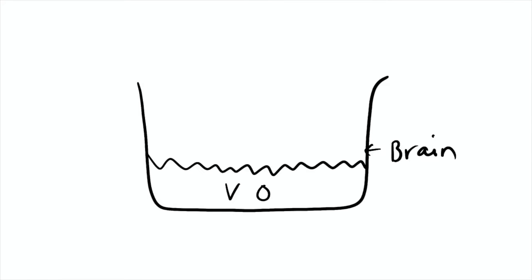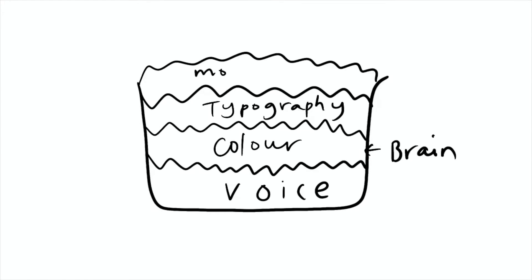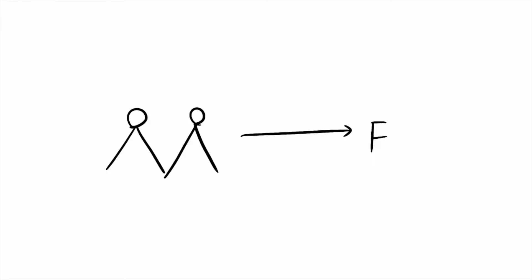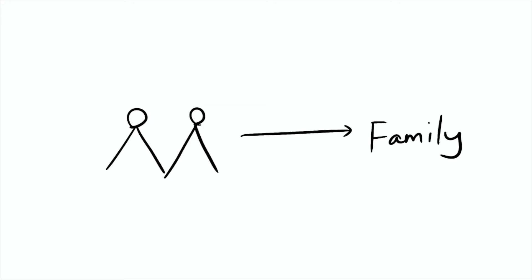Secondly, the styles of these explainer videos are kept simple. This is aimed to reduce viewers' cognitive load to avoid being overwhelmed with too much information at a time. If in animation characters are the king, then in an explainer video, the focal point is leaning on the relationship between characters and concepts.